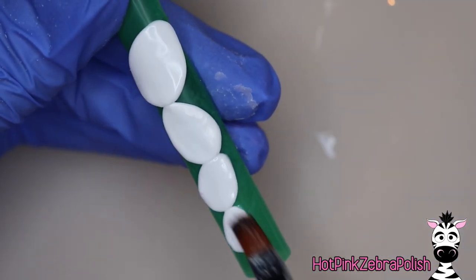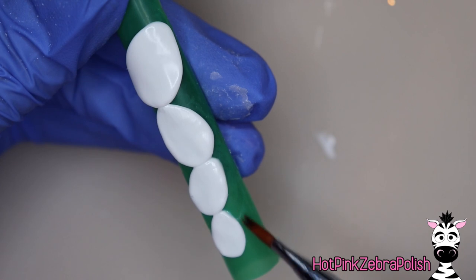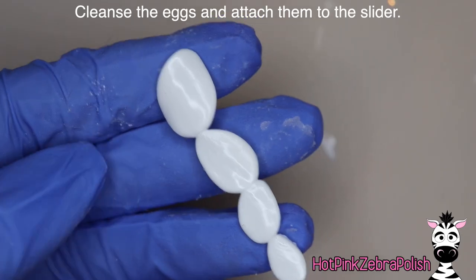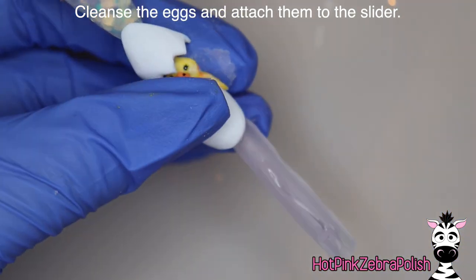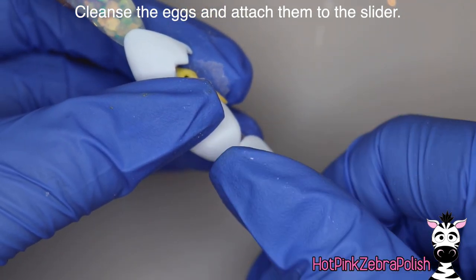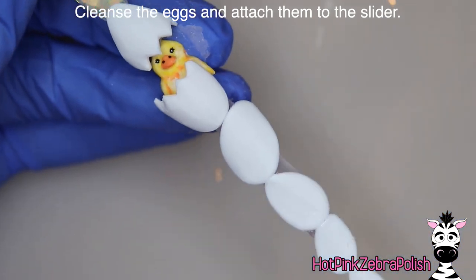Like I said I did tip them back and forth alternating, but that one on the very tip I decided to do straight. So now after you have all that you're going to cleanse your eggs and then we're going to attach them to the slider. So you want to attach them so they kind of go right up to where the bottom of the chick's egg is.